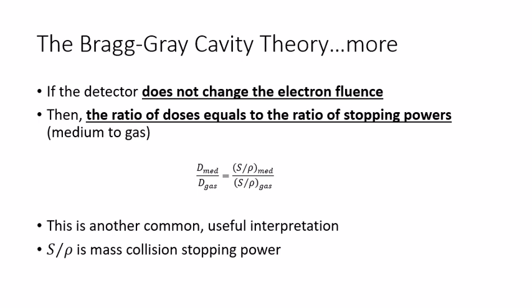So basically if the existence of the detector does not change the electron fluence, then the ratio of doses equals the ratio of stopping powers.